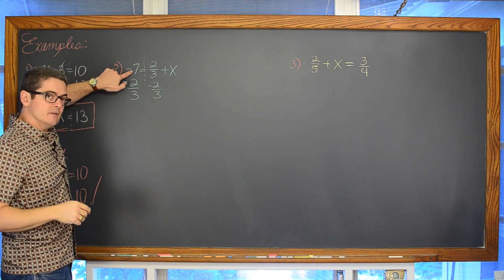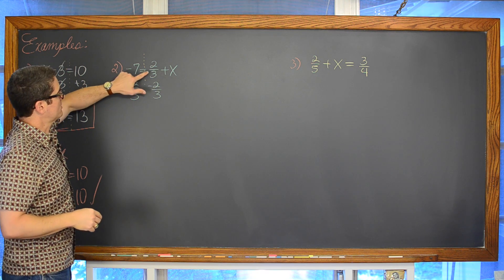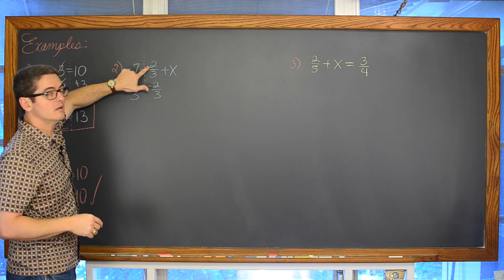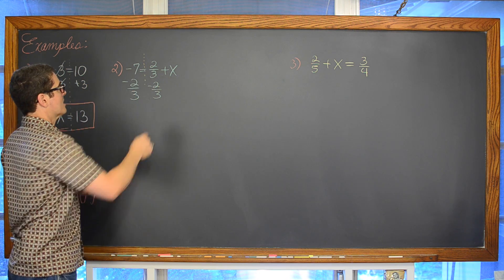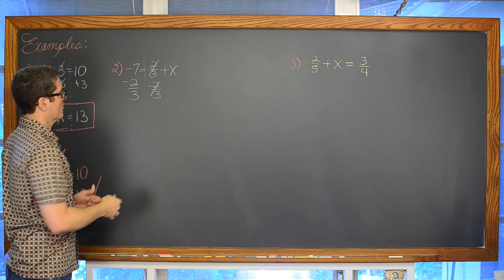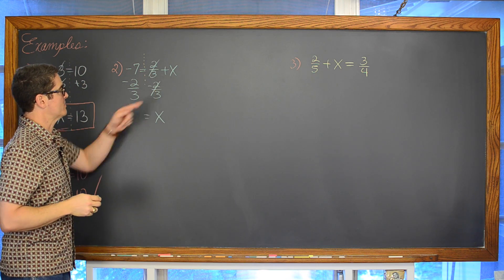Now we have negative 7 minus 2 thirds. And then on the right we have positive 2 thirds minus 2 thirds. Well anything minus itself is going to come out to be zero. That is why we are introducing this inverse math operation. So on the right hand side we are just simply going to have x because that comes out to be zero.